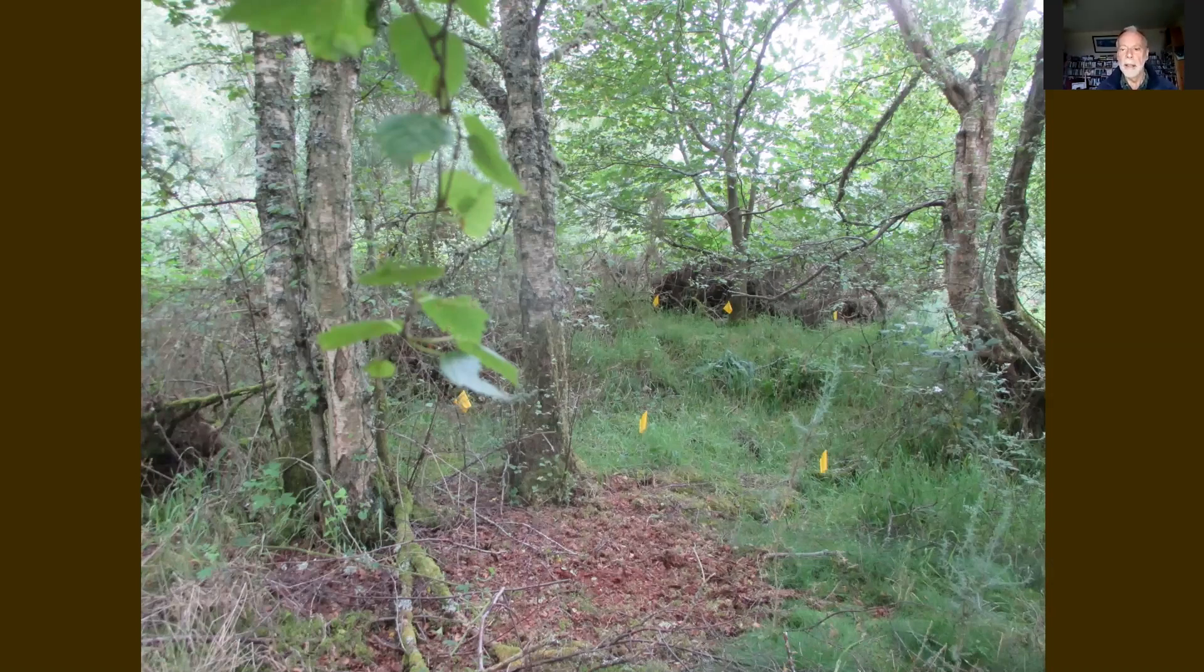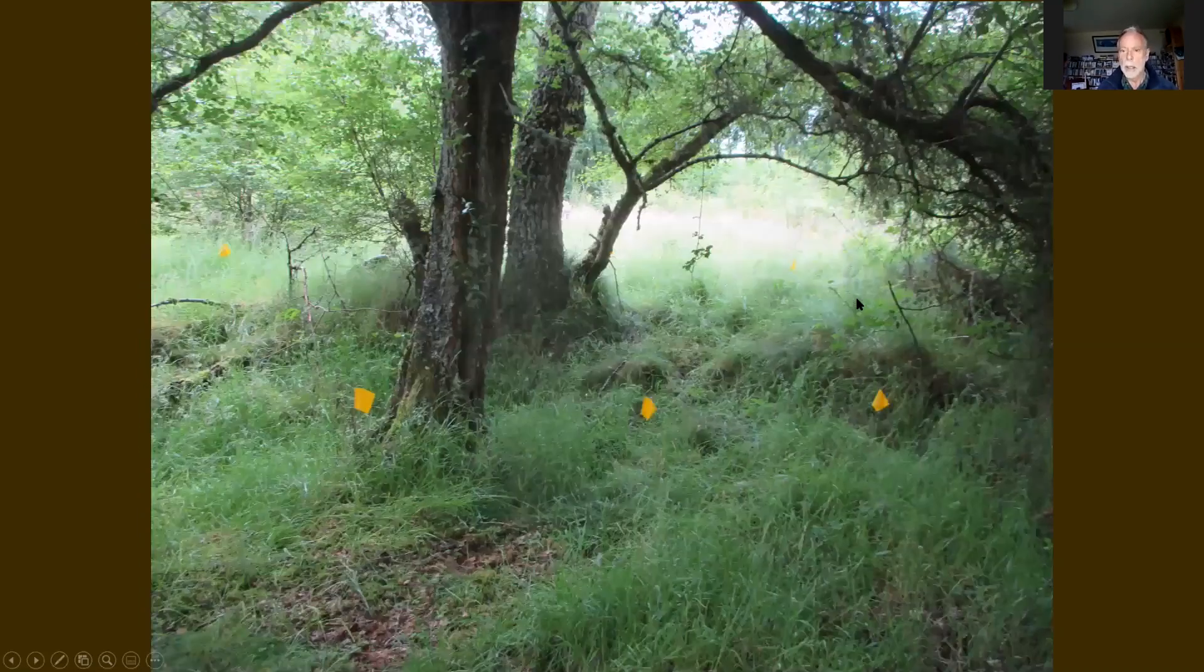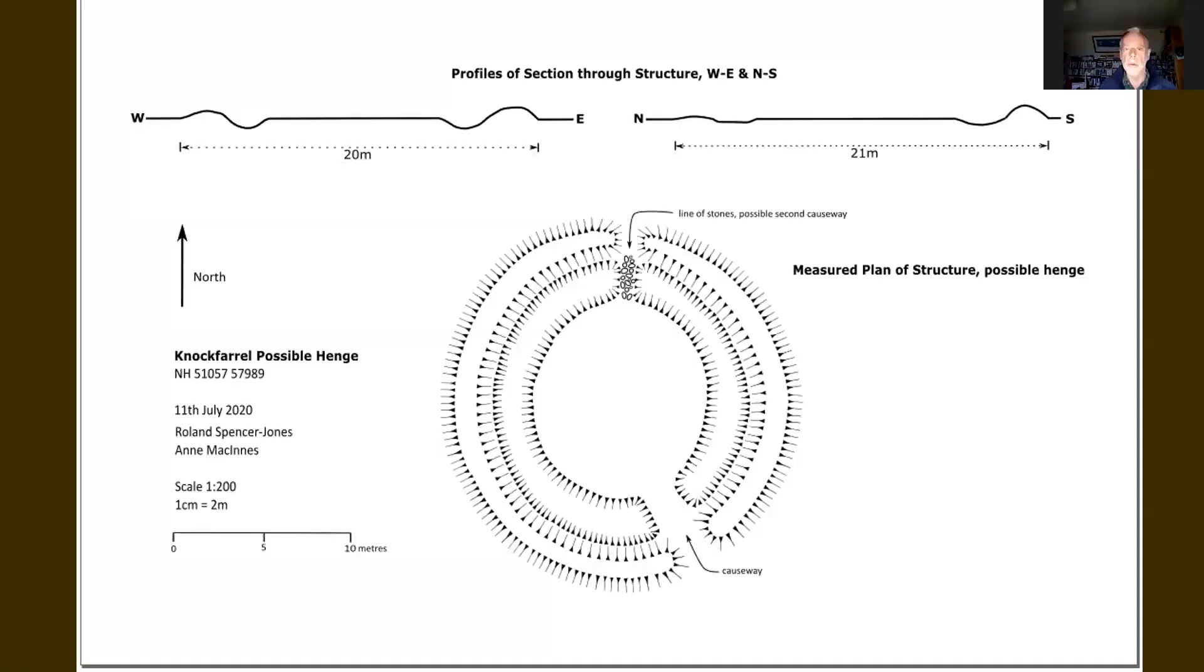So edge of platform, ditch and bank. There is a suggestion of a northern causeway as well. Henges can have one or two causeways. This, I have to say, looks a bit more modern than the causeway in the southeast corner. But as a result of Anne's flags and us spending about half an hour with the tape measure, we produced this picture of what the henge seems to look like. Notice the profiles at the top of the screen. So the left hand profile is going this way, where you cut through beautifully the banks and the ditches. The top right, the north-south profile goes through here. So it's a little bit, it is north-south, but it is a little bit atypical.